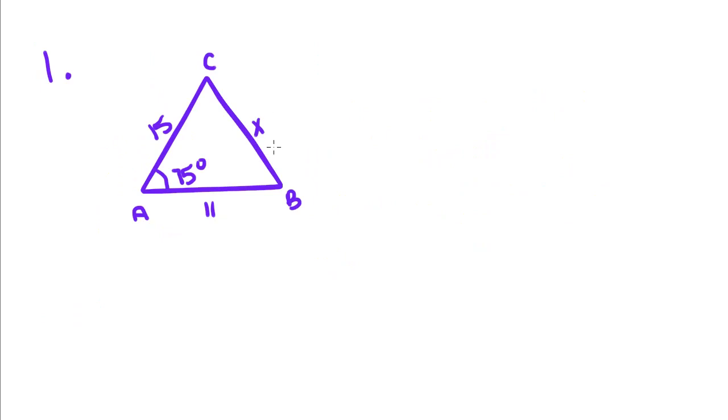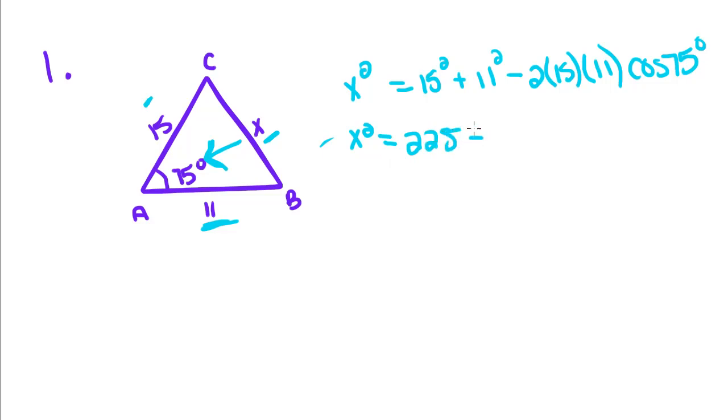Okay, so we're trying to find out what X equals. So X squared is going to equal A squared plus B squared minus 2A times B cosine of the angle opposite the side we're talking about. So cosine of 75. X squared is equal to, and this is where we're going to have to start using the calculator.